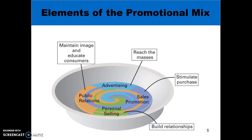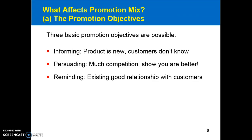The proportion in which you use each tool will depend on certain factors. Factor A is the objectives you want to achieve in the marketplace. For example, if you want to inform a large number of customers about your new product, you will likely use a lot of advertising, even if it is quite expensive. No wonder companies are willing to pay close to $5 million for a 30-second ad during the Super Bowl, because 100 million people are watching at any point in time.